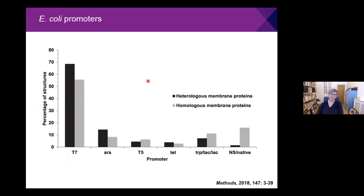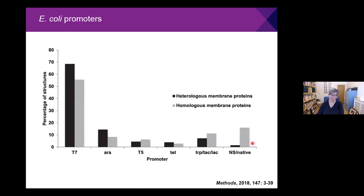For promoters in E. coli, with black bars representing heterologous proteins and gray representing E. coli proteins expressed in E. coli, there is a real predominance of one choice: the IPTG-inducible T7 promoter system. Other promoters are used, but by far the most common choice is T7. For homologous membrane proteins, it's perhaps not surprising that they often use their own native promoter.